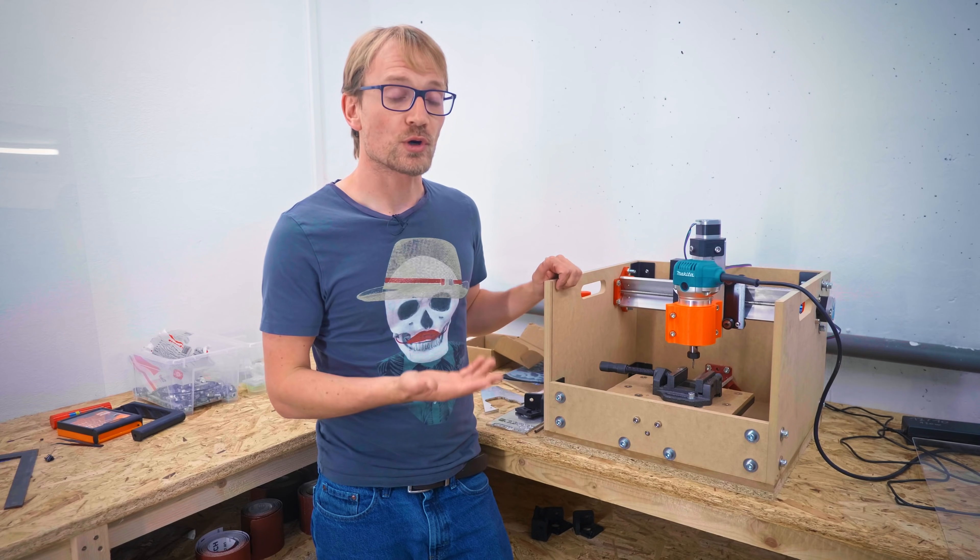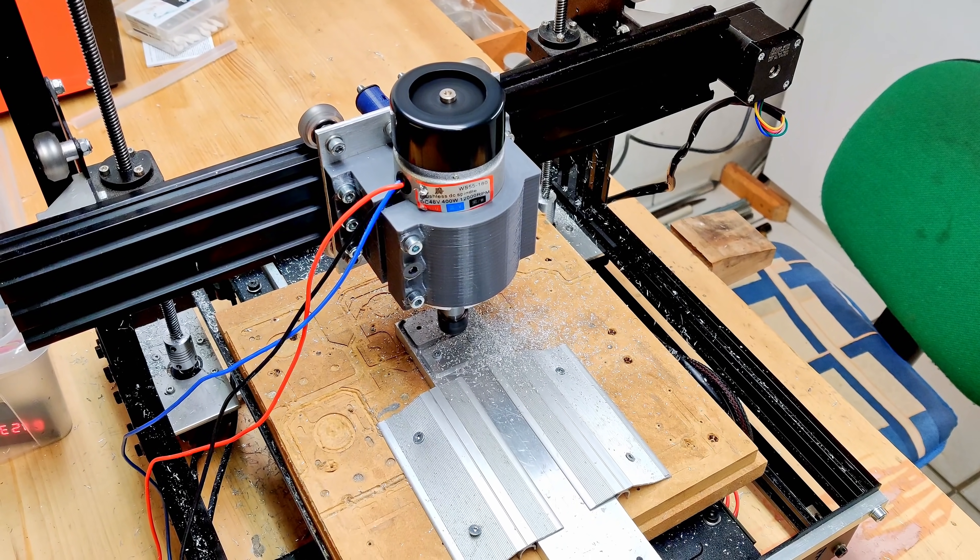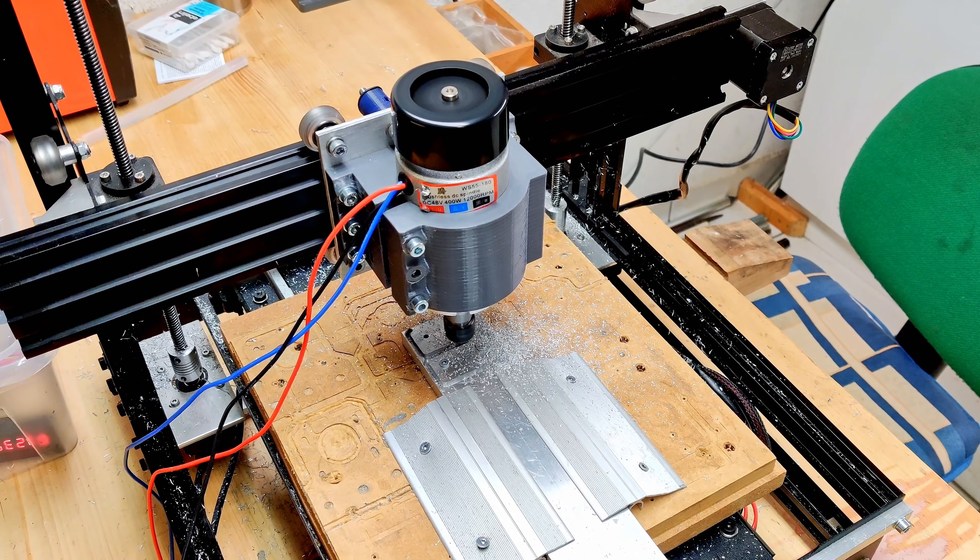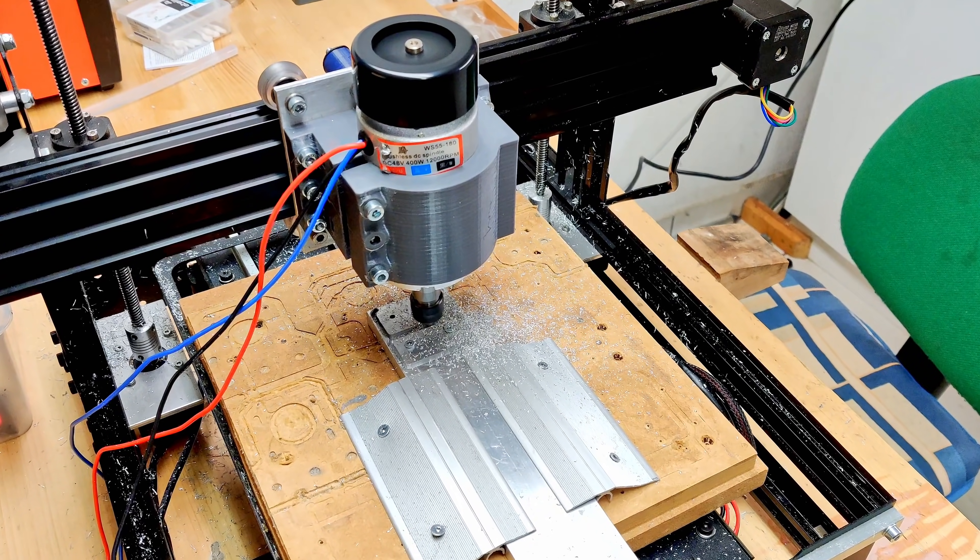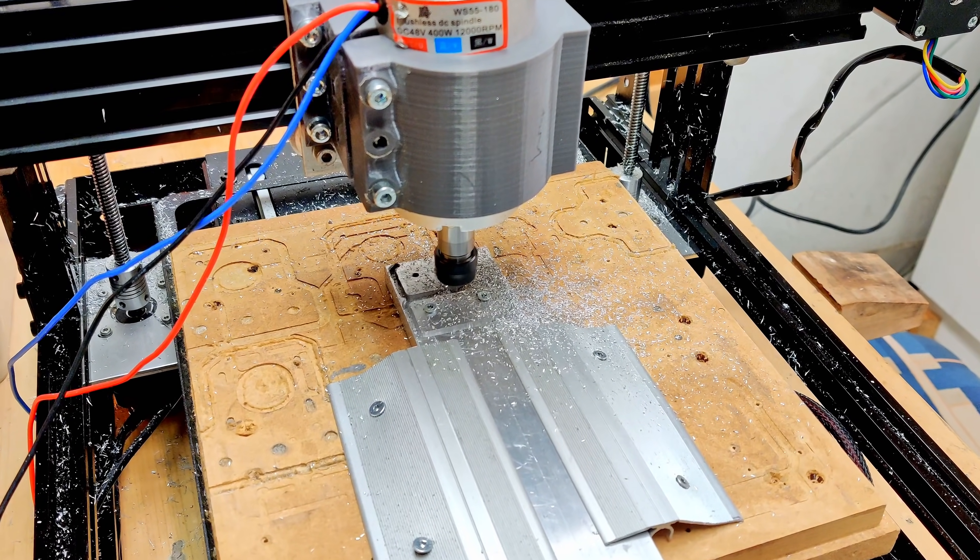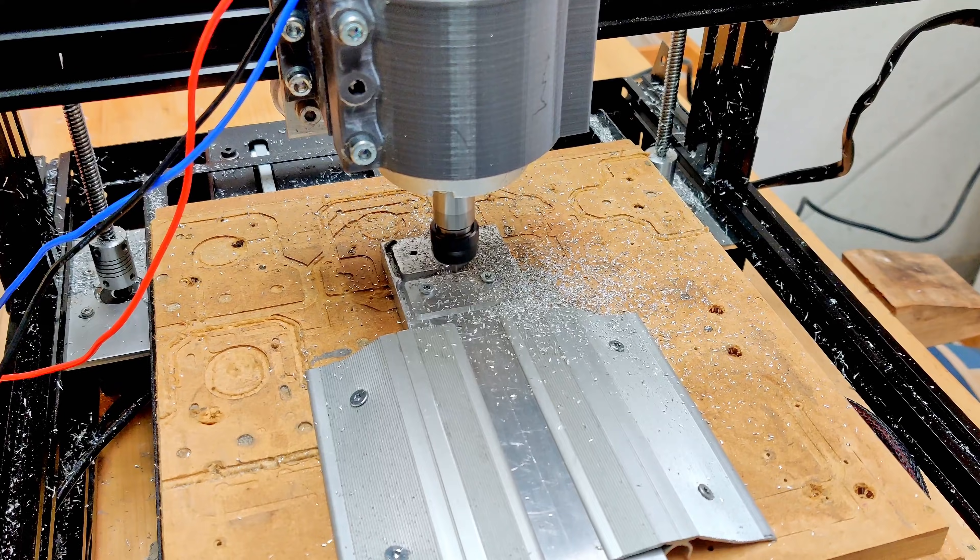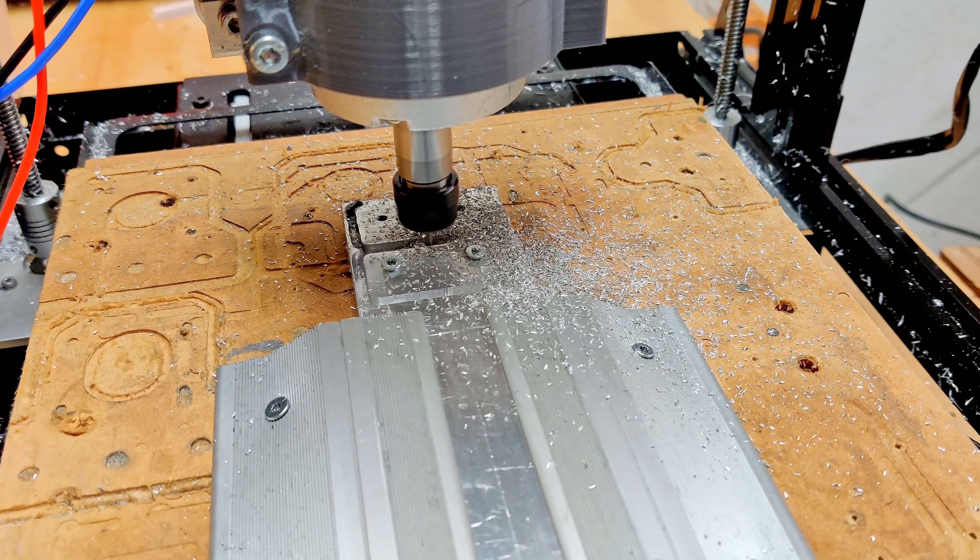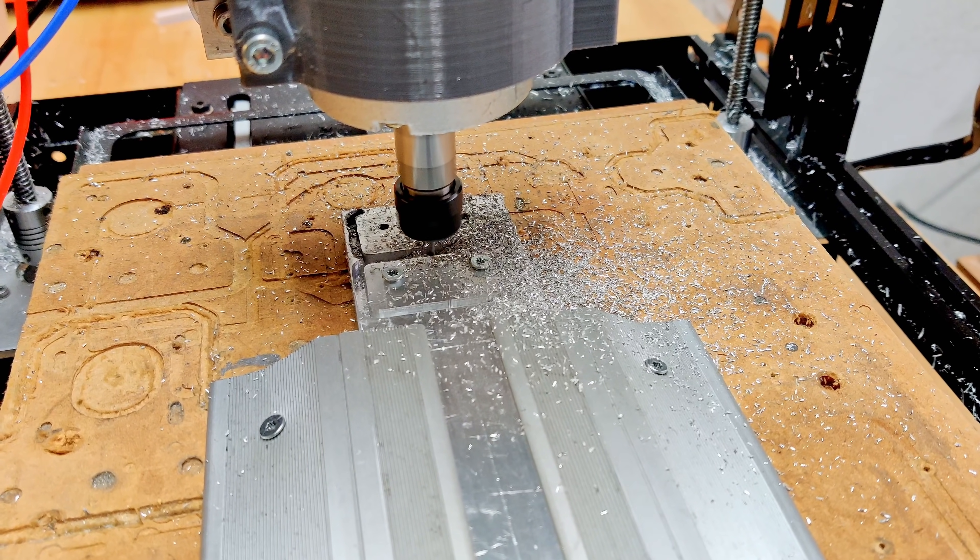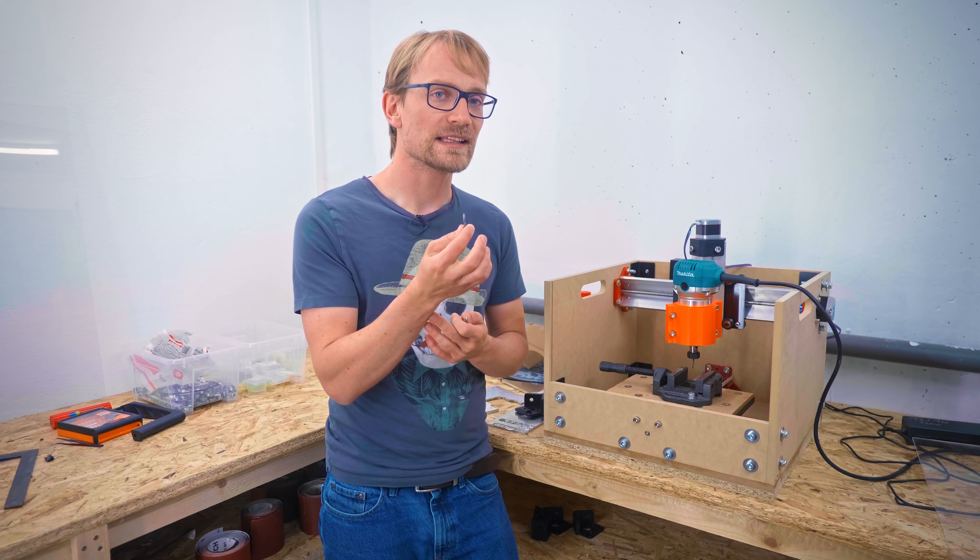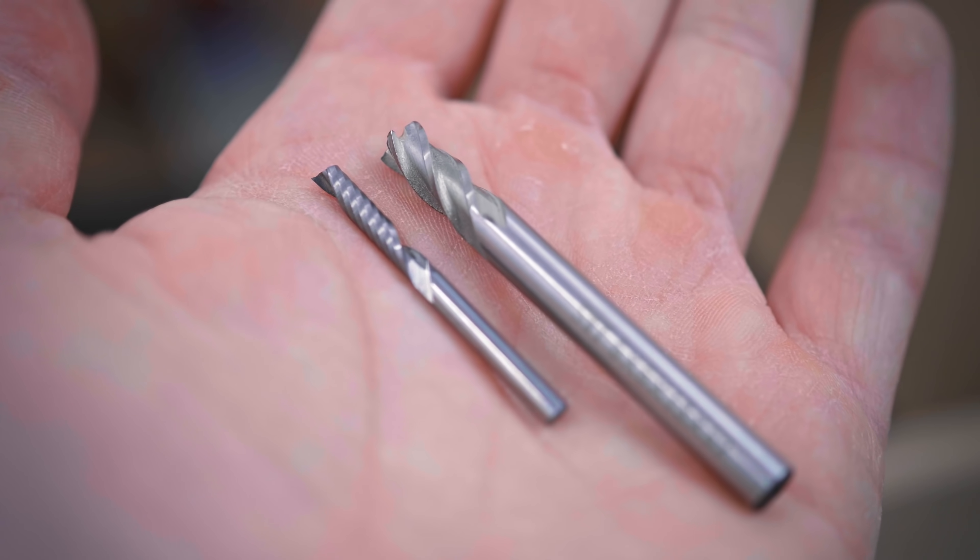I do like the simple brushless ER 11 spindle that's now living on the Mendelmax mill, but that only goes up to 12,000 RPM. Sounds like a lot, but because these machines aren't rigid enough to be running decent sized quarter-inch or 6mm end mills, the go-to tooling is an eighth of an inch. And that needs to be run quite fast to cut properly. I'm running this single-flute end mill at about 20,000 RPM, and I have a feeling that I maybe should even be going a bit faster.